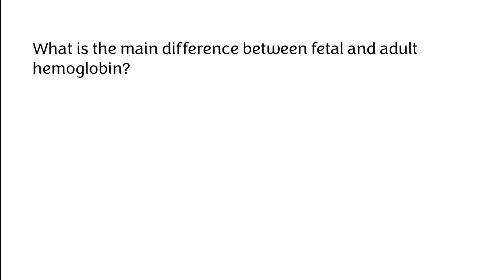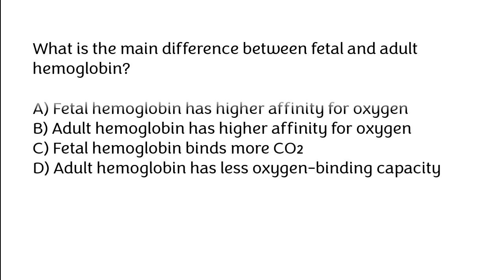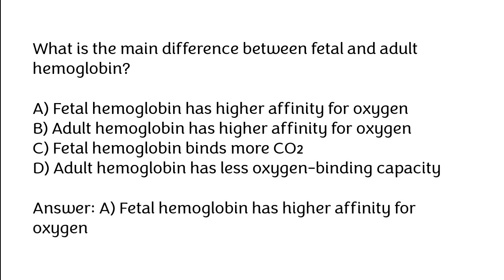What is the main difference between fetal and adult hemoglobin? (A) Fetal hemoglobin has higher affinity for oxygen, (B) adult hemoglobin has higher affinity for oxygen, (C) fetal hemoglobin binds more CO2, (D) adult hemoglobin has less oxygen binding capacity. Correct answer is option A, fetal hemoglobin has higher affinity for oxygen.